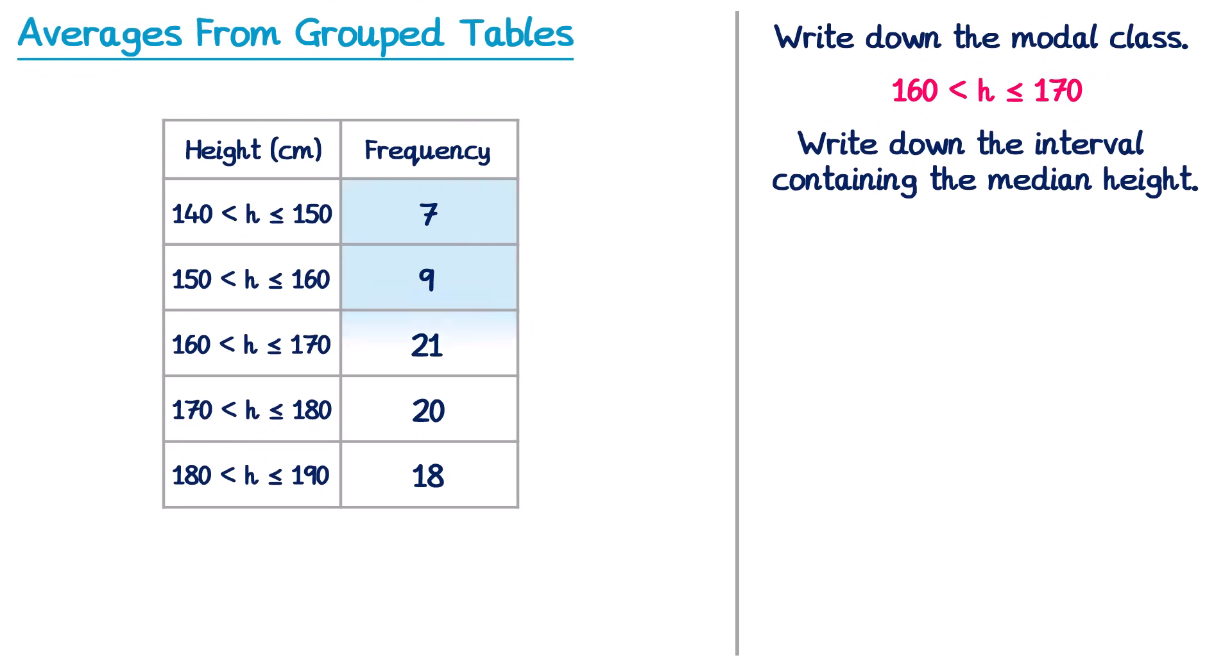First of all, you're going to add up all of the frequencies to get a total frequency. For this table it's 75. You then take that total frequency, so 75, and add 1, so that's 76. If you then divide this by 2, so 76 divide by 2, we get 38. This tells us the median height will be the 38th value.